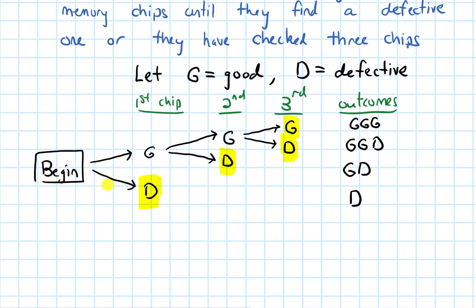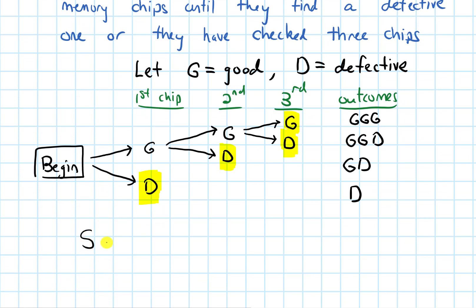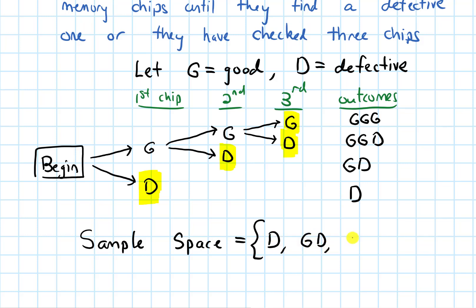So there are four outcomes, and we can form our sample space. We write out all outcomes in a set: D, GD, GGD, and GGG.